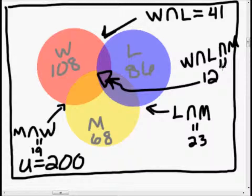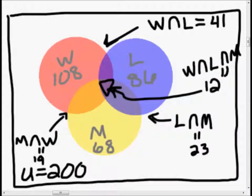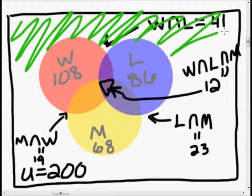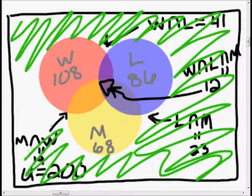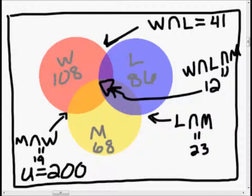So we wrote down everything we know. You may be wondering what this does for us — let's see what the question is asking first. The question is: how many are unmarried, do not live in a large city, and do not live in the west? First, let's shade in what that area is — that's this green area. They're asking for the complement: the thing that does not fit in any of those other categories. How are we going to find that? Let's start working on it.